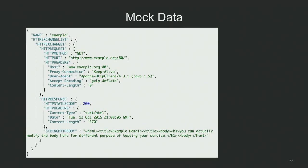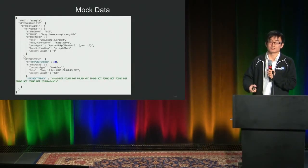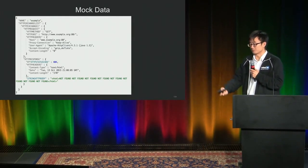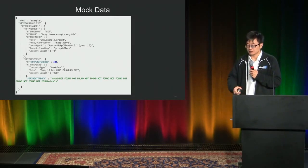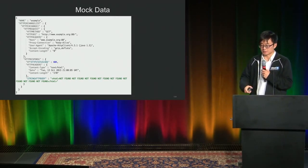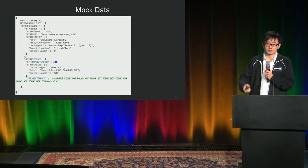Here's the actual mock data. You can see all the information about the request and response. You can manipulate the response by modifying this file — for example, changing the status code from 200 to 404 to indicate a not-found response, or modifying the HTTP body content. This way, you can test your service in many more scenarios and see how robust and reliable it is.